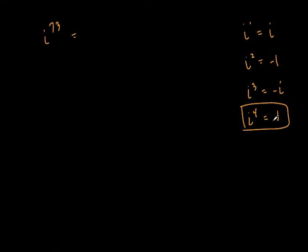So i to the fourth is 1, i to the eighth is 1, i to the twelfth is 1, i to the 48th is 1 — because 48 is a multiple of 4. How do you know something's a multiple of 4? If you can divide it by 2 and then divide that result by 2 again and get a whole number. First, you've got to have an even number, then whatever you get after dividing by 2 also has to be even. Now, is 73 even? No — so you know it's not divisible by 4.